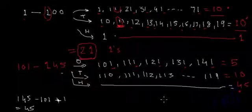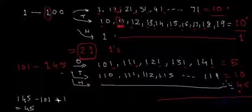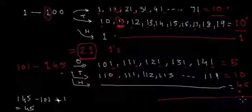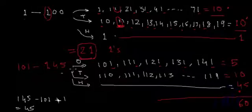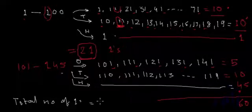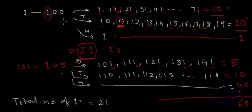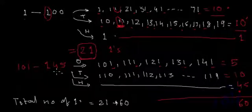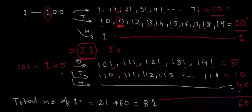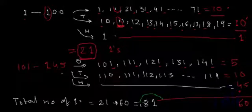Now let's add all of them. From pages 1 to 100, we have 21 ones. From pages 101 to 145, we have 45 plus 10 plus 5, which equals 60 ones. So the total number of 1s is 21 plus 60, which equals 81. There are 81 ones printed in the page numbers of a 145-page book.